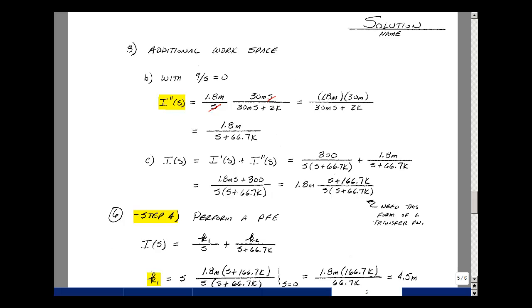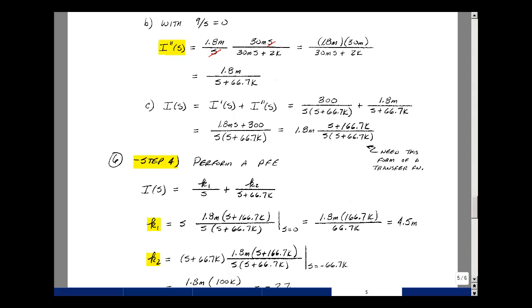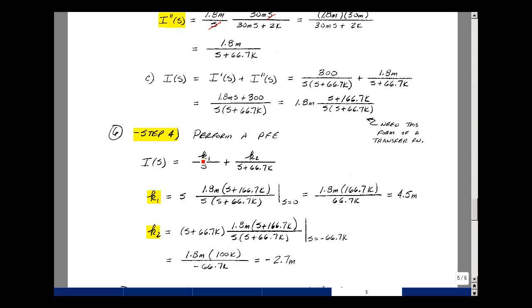Step number four, then, is to do the partial fraction expansion. So I can write my I(s), then as some k1 over S plus some k2 over (S + 66.7k). To find k1, I'll multiply my transfer function times S, and then let S equal zero. These terms cancel. Then I have 1.8 mA times (0 + 166.7k) divided by (0 + 66.7k), and that turns out to be 4.5 mA.